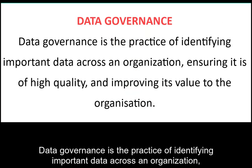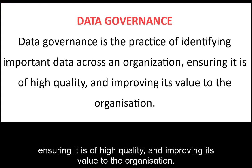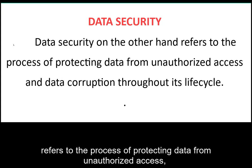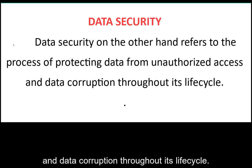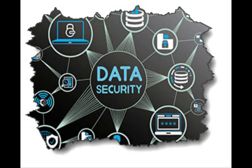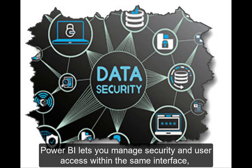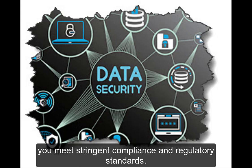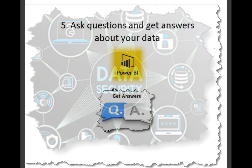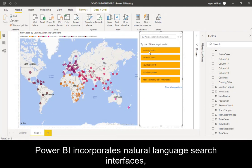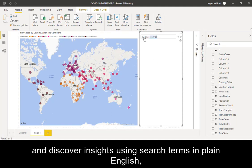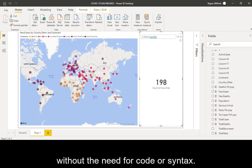Data governance is the practice of identifying important data across an organization, ensuring it is of high quality and improving its value to the organization. Data security, on the other hand, refers to the process of protecting data from unauthorized access and data corruption throughout its life cycle. Power BI lets you manage security and user access within the same interface, removing the need to use other tools to ensure you meet stringent compliance and regulatory standards. Power BI also incorporates natural language search interfaces to allow users to create visualizations and discover insights using search terms in plain English without need for code or syntax.